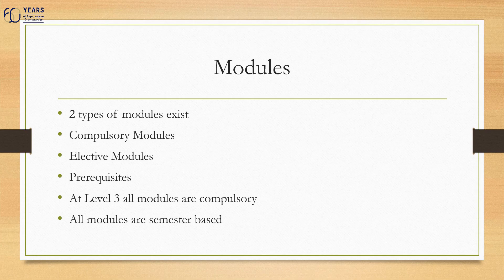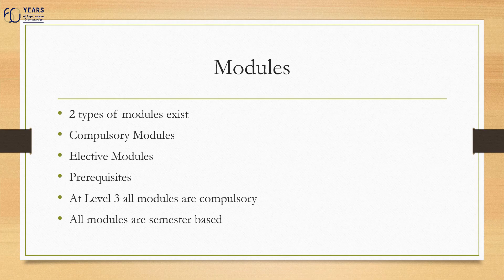Course content is presented as modules and two types of modules exist: compulsory or elective modules. Compulsory modules are modules considered core to your program, while elective modules are those chosen to complement your course. In order to take certain modules at a higher level, modules at the lower level must have been completed — these are termed prerequisite modules. The mainstream program is composed of a combination of compulsory and elective modules, and all these modules are semester-based.